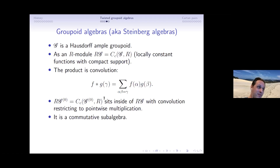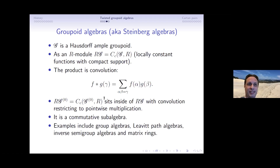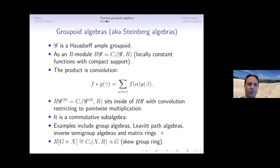Examples of groupoid algebras include group algebras, Leavitt path algebras (taking the path groupoid), inverse semigroup algebras (using Paterson's universal groupoid), matrix rings (from a finite equivalence relation groupoid), and many others. The semi-direct product construction gives what analysts call the crossed product and what ring theorists call the skew group ring.